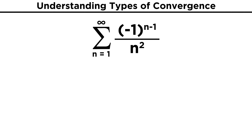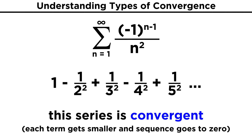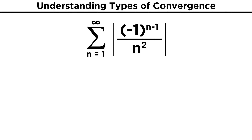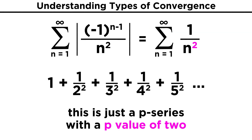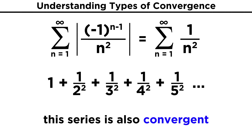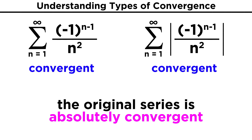Taking negative one to the n minus one over n squared, we said that this series was convergent. Now let's take the absolute value of this series. This means that whenever the negative one gives us a negative value for a particular term in the series, we just make it positive instead. So rather than an alternating series, we just get a regular p series with a p value of two, as though the negative one term was not present. We know that this series is also convergent, and since they are both convergent, then the original series is absolutely convergent.